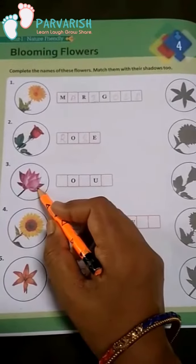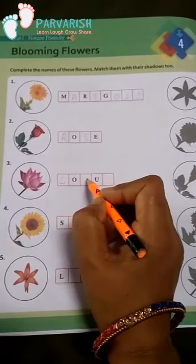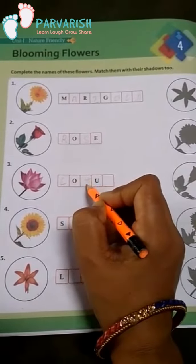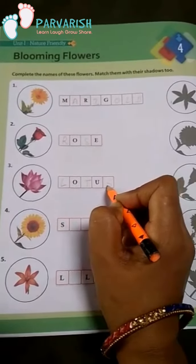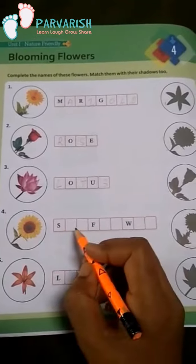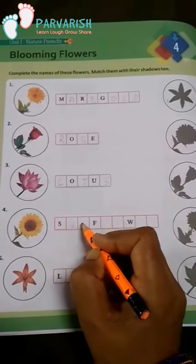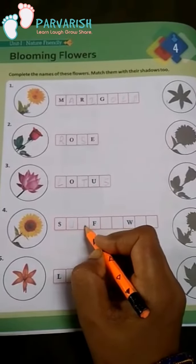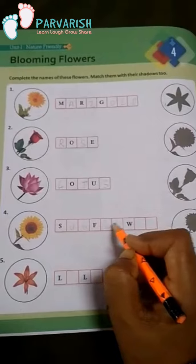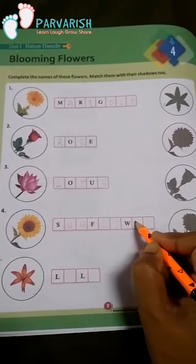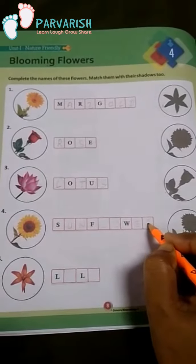Which flower here? Lotus. L-O-T-U-S. Number 4 — which flower here? Sunflower. S-U-N-F-L-O-W-E-R.